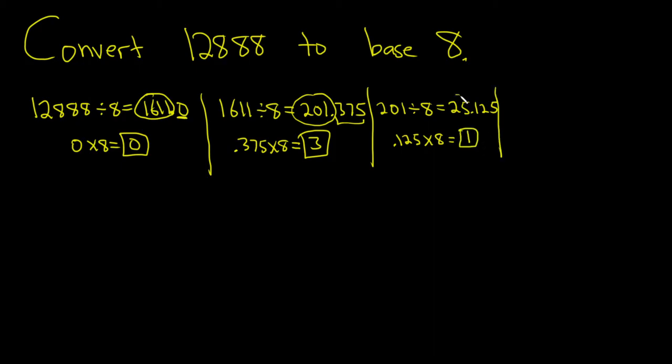Then we do it again. We take the 25, divide it by 8. 25 divided by 8. This is equal to 25 divided by 8 is 3.125.